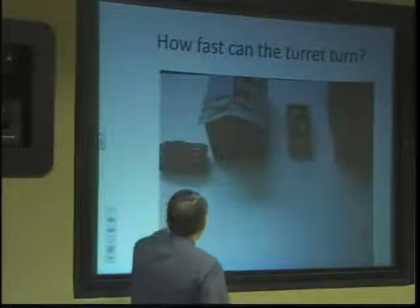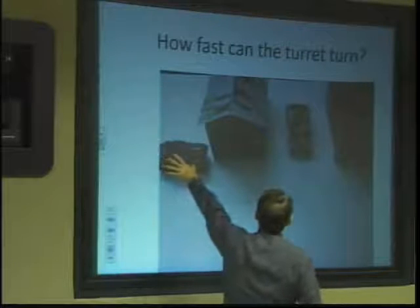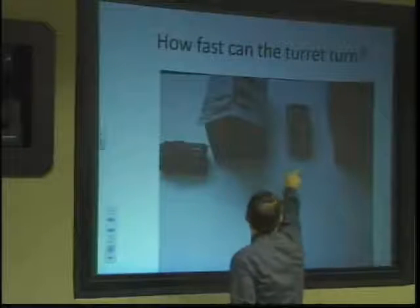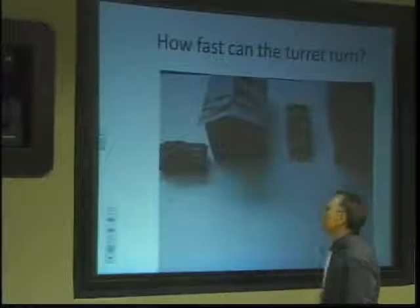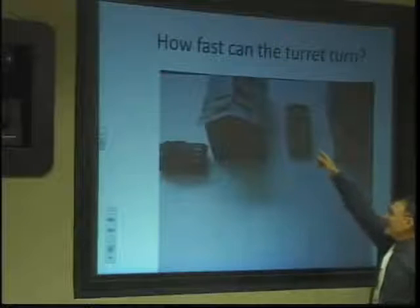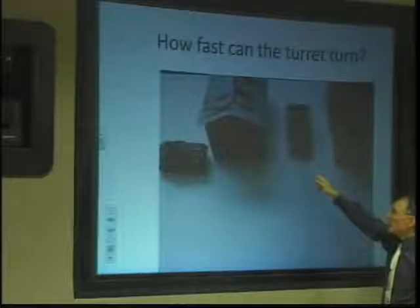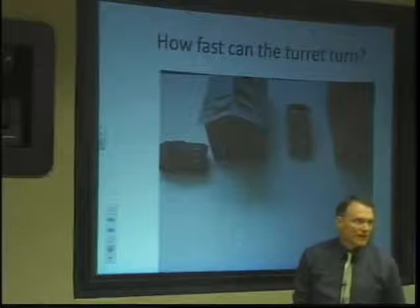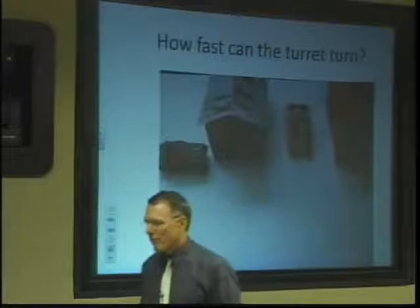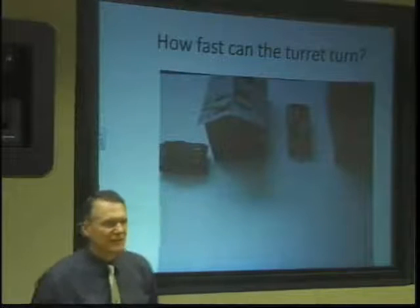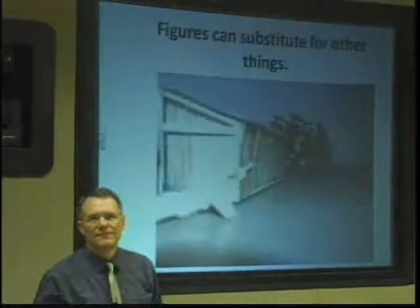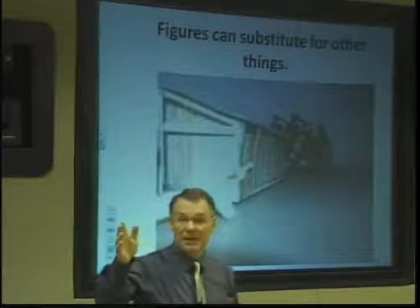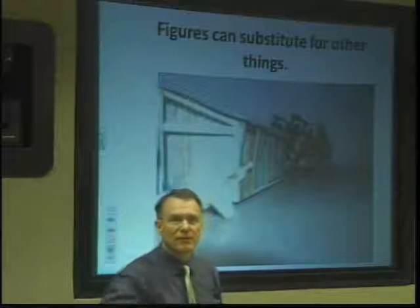In this example, we have a light tank coming down one street and a heavy tank coming down another. Someone looking forward from one tank can see a gun barrel coming around the corner, while the other tank can't see anything. When that second tank emerges, it could be very critical to know how fast the turret can turn — if it's instantaneous, it's a very different outcome than if it takes 35 seconds. Figures can substitute for other things in physical prototyping.